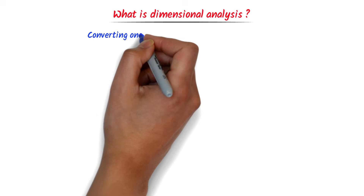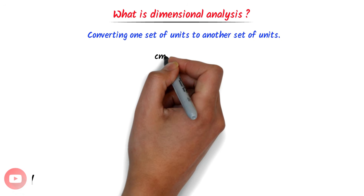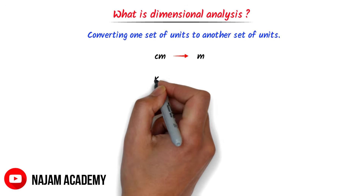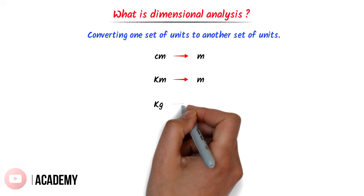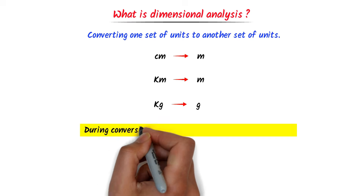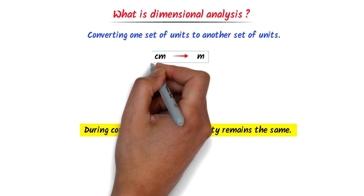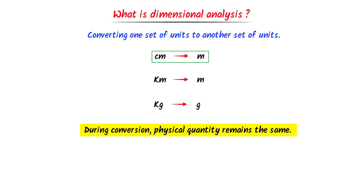Dimensional analysis is a process of converting one set of units to another set of units. For example, converting centimeter to meter, kilometer to meter, kilogram to grams, etc. Remember that when we convert one set of units to another set of units, the physical quantity remains the same. For example, in this case, we convert centimeter to meter — the physical quantity is length and it remains constant.